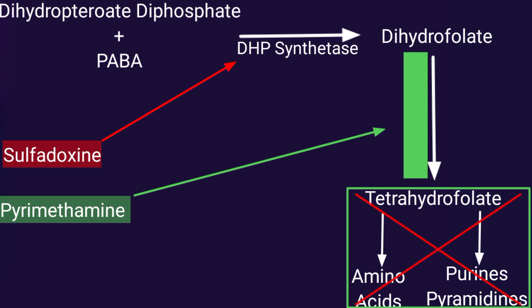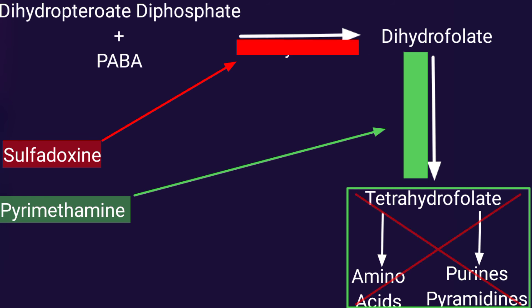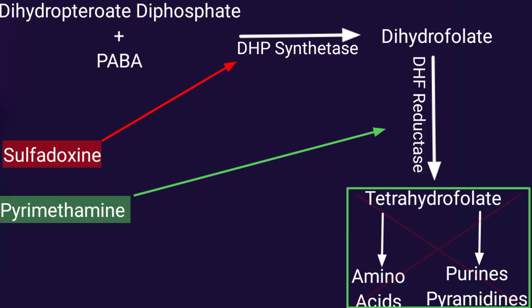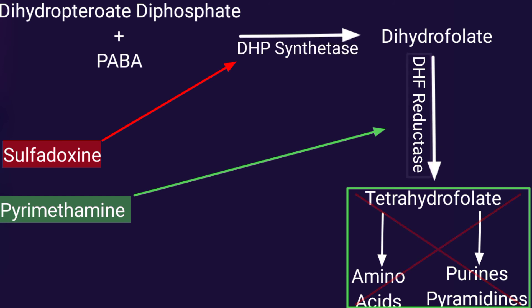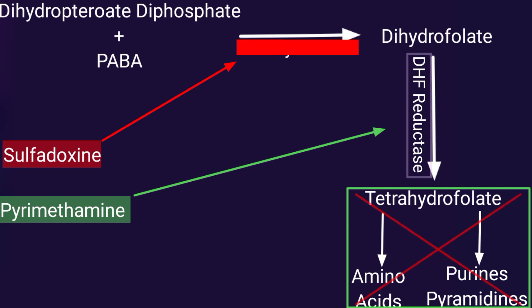One important point: pyrimethamine can be used alone, but it can cause the development of resistance — the reductase enzyme can mutate and become resistant. As a result, pyrimethamine alone becomes ineffective against the reductase enzyme. That is why sulfadoxine is given along with pyrimethamine, to prevent resistance and ensure therapeutic efficacy.